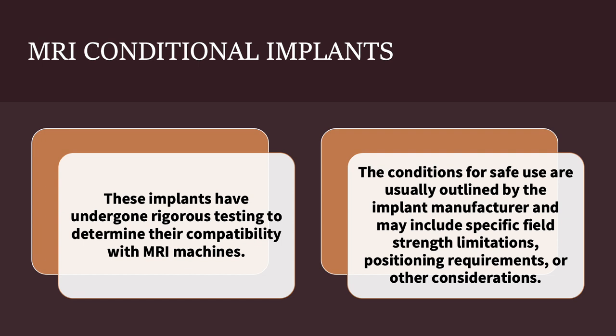MRI conditional implants are those that may be safely used under specific conditions during an MRI procedure. These implants have undergone rigorous testing to determine their compatibility with MRI machines. The conditions for safe use are usually outlined by the implant manufacturer. They may include specific field strength limitations, positioning requirements, or other considerations. Examples of MRI conditional implants include some types of pacemakers, cochlear implants, or joint replacements.